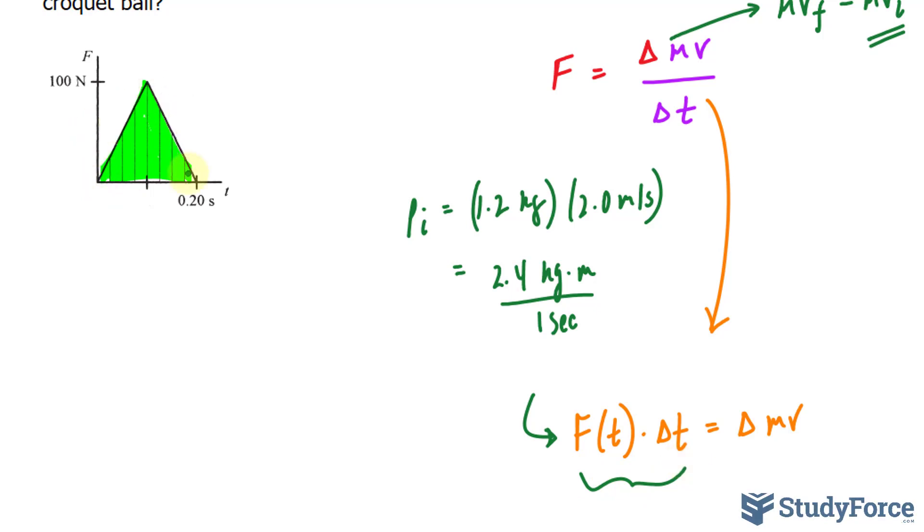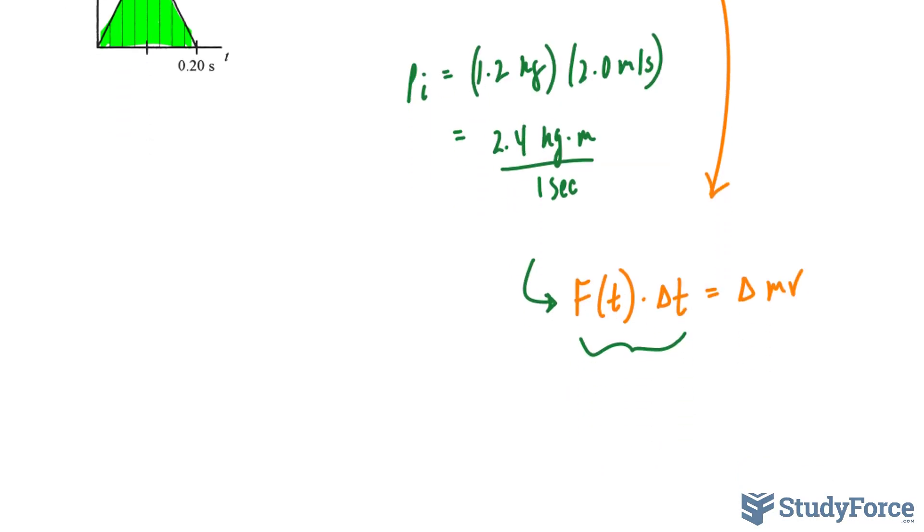Sometimes this graph might be a parabola or a different shape. For that case, you might need to use higher level mathematics such as calculus to take the integral of the function on the left side of the equation. We won't be doing that in this case, but I'm just saying it in case you're studying this at a higher level. The area underneath that triangle represents the right side here.